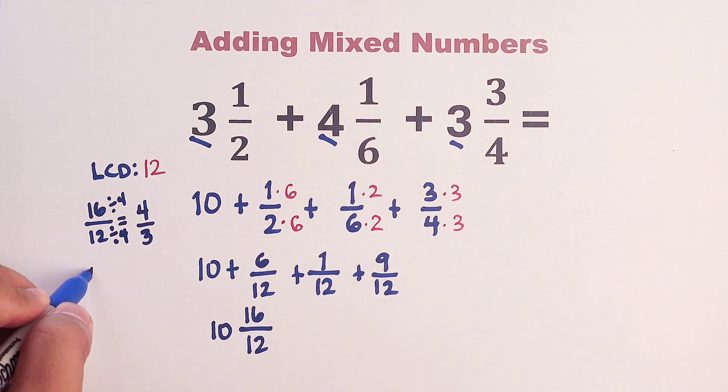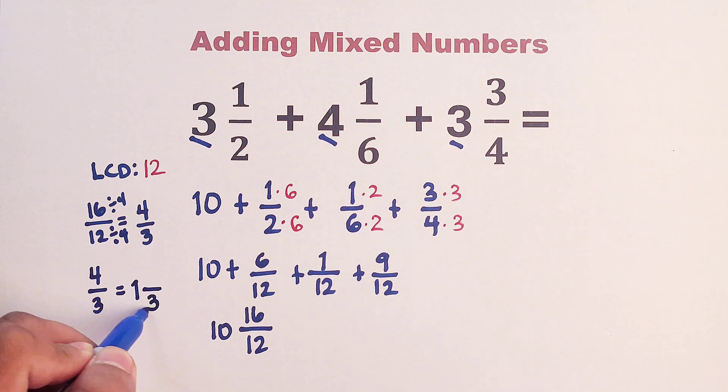Now, the thing now is we will convert 4 over 3 into a mixed number. So how are we going to do that? Think of how many 3s do we have in 4. How many 3s do we have in 4? We have only one 3 inside 4.